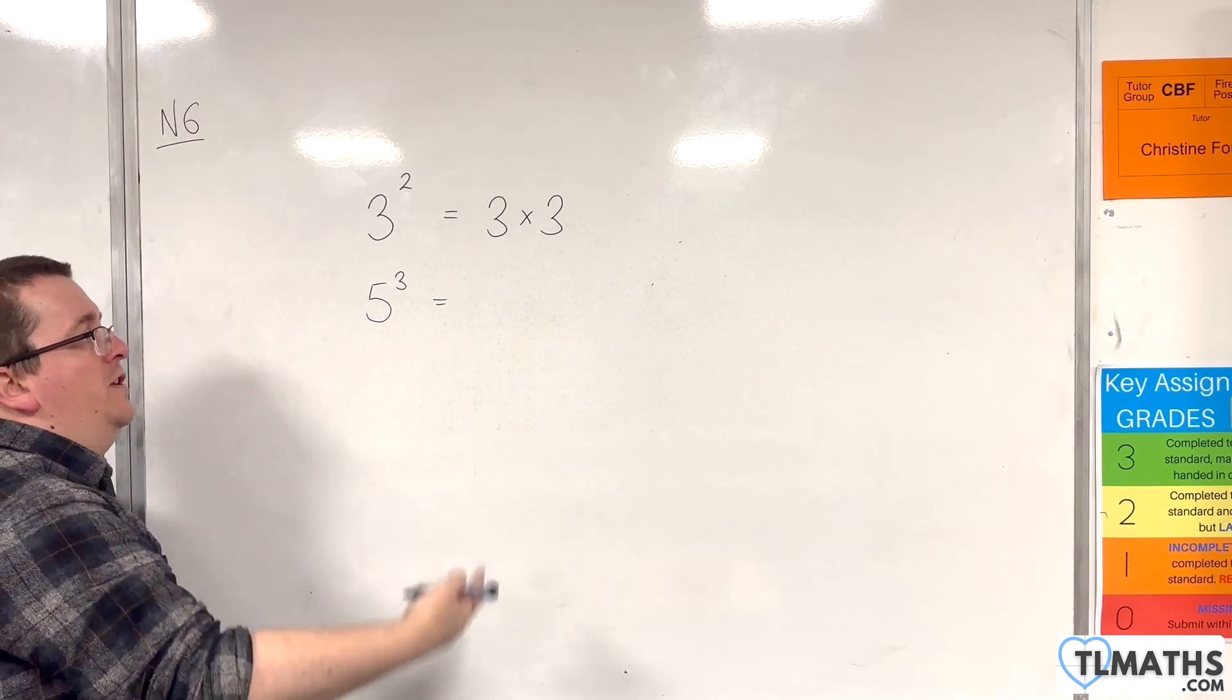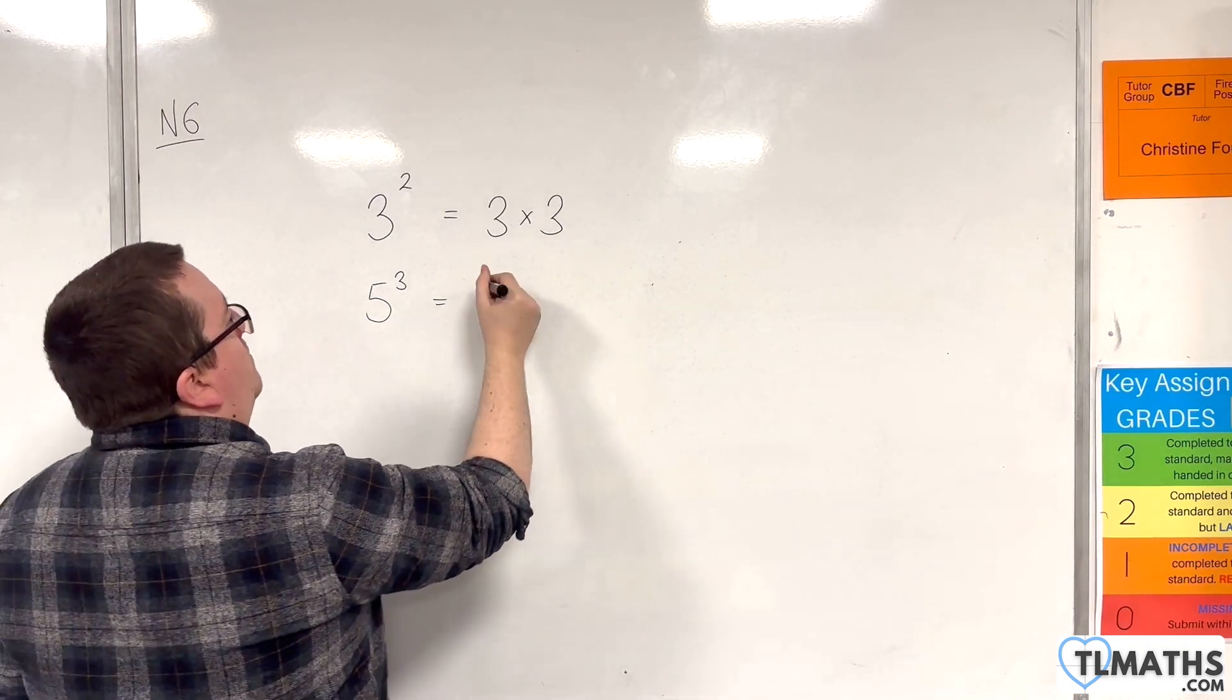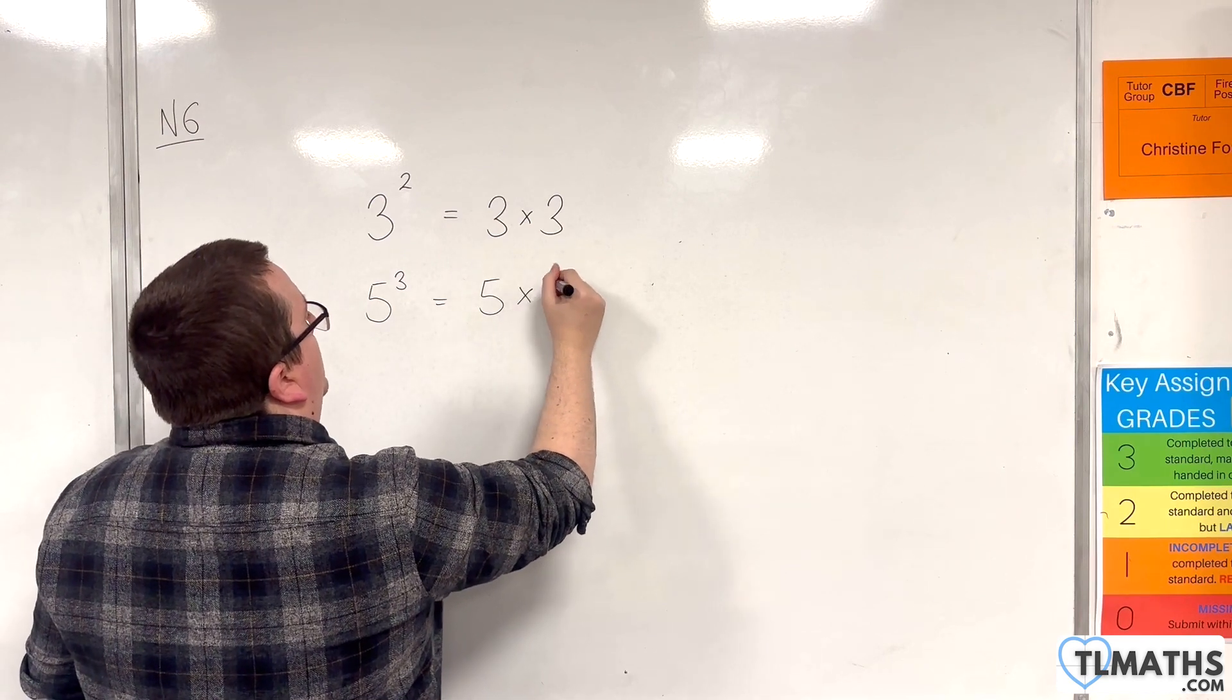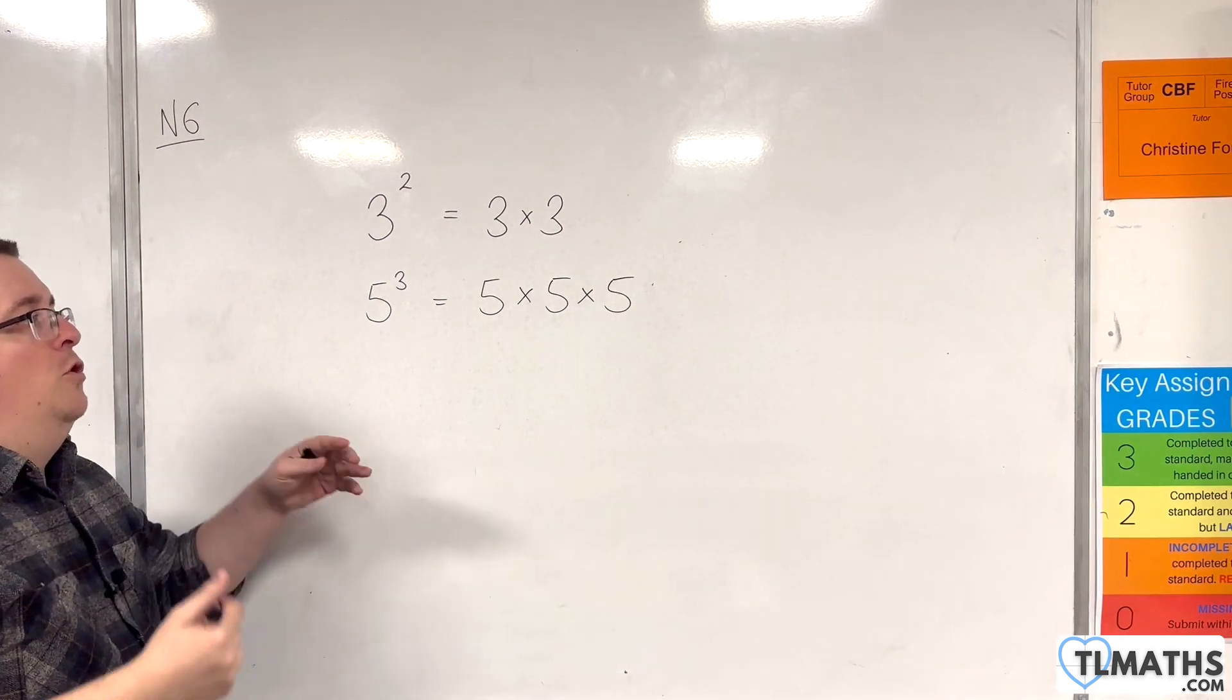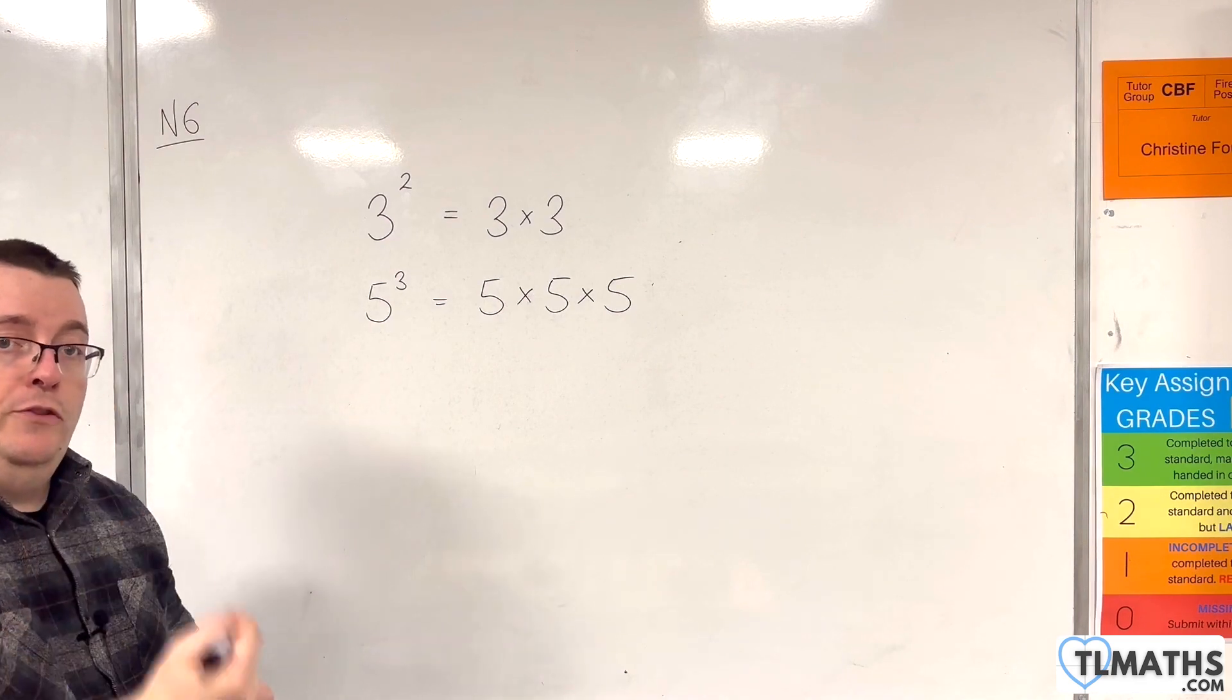But just to make sure you're aware of the notation, 5 cubed would mean 5 times 5 times 5. So you're multiplying 5 by itself 3 times.